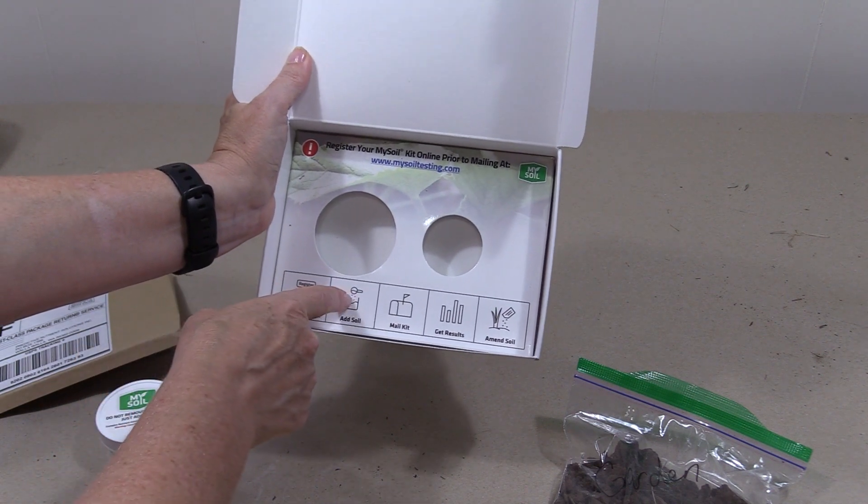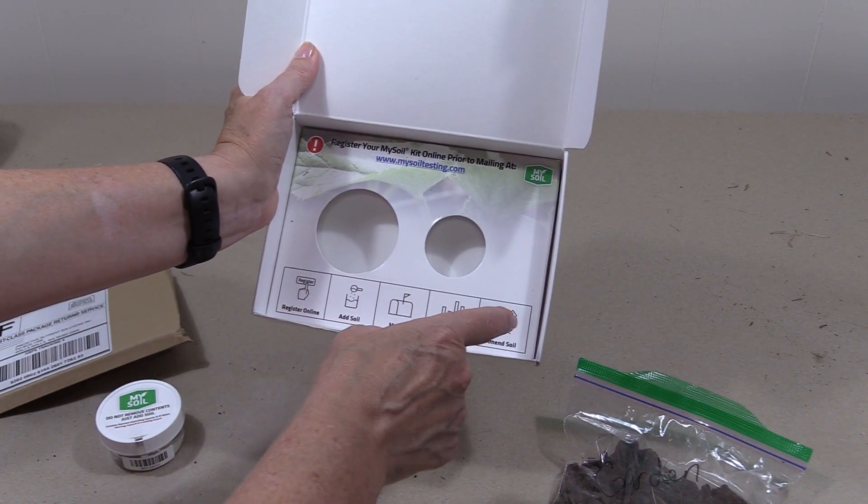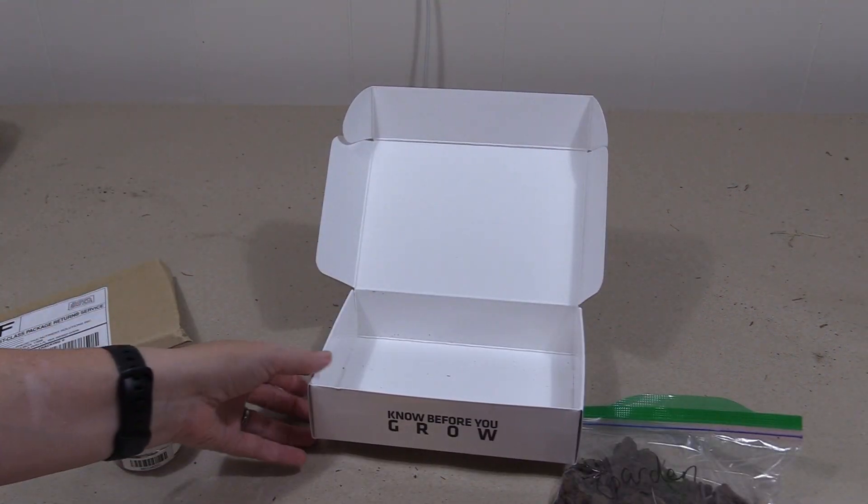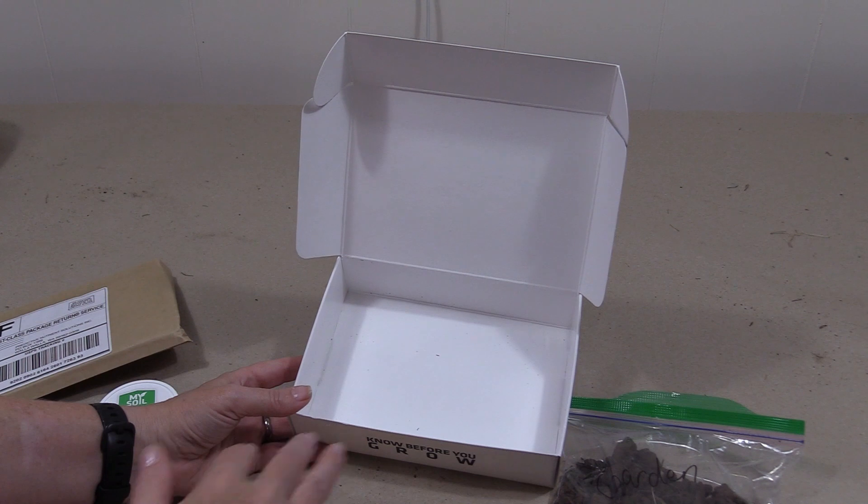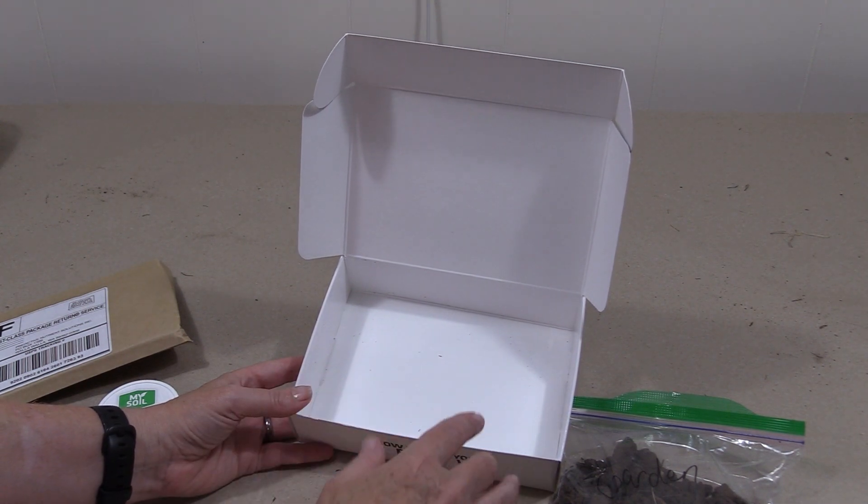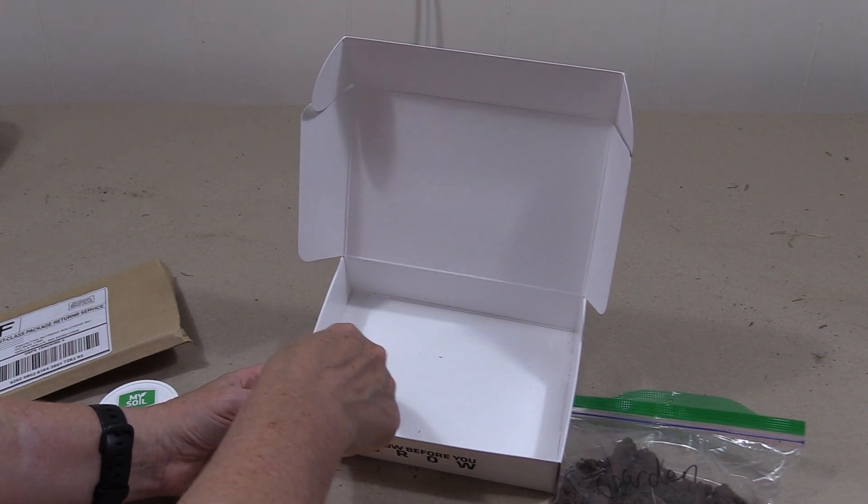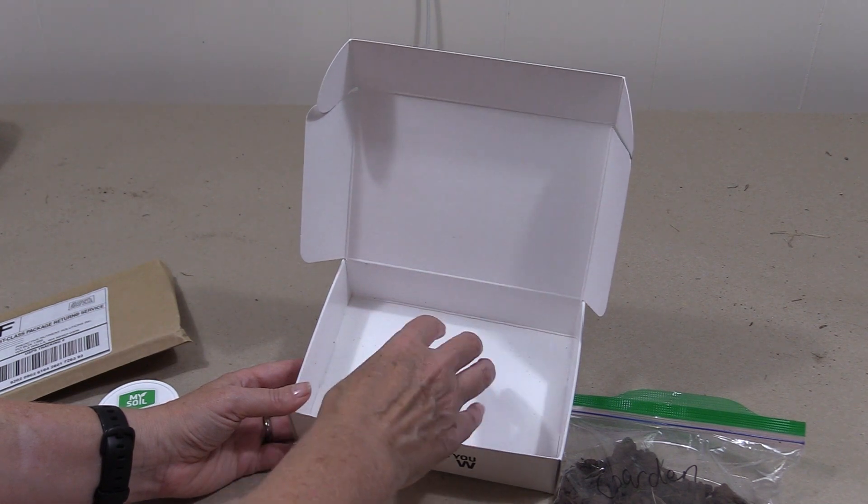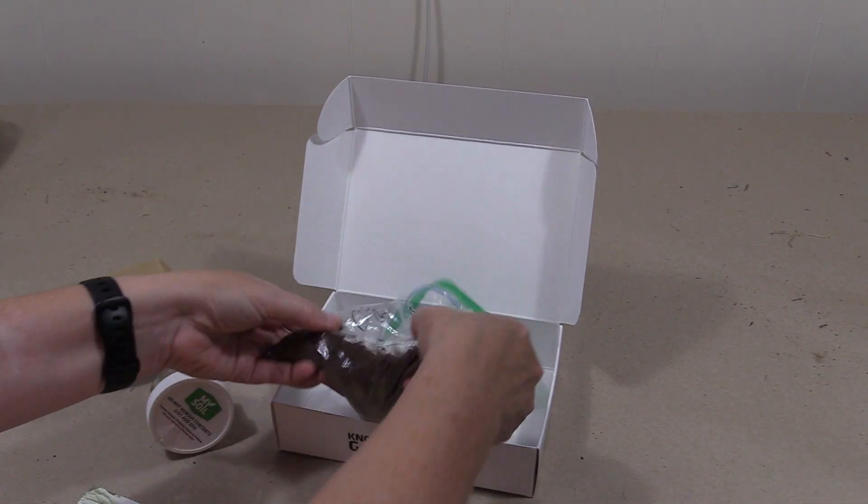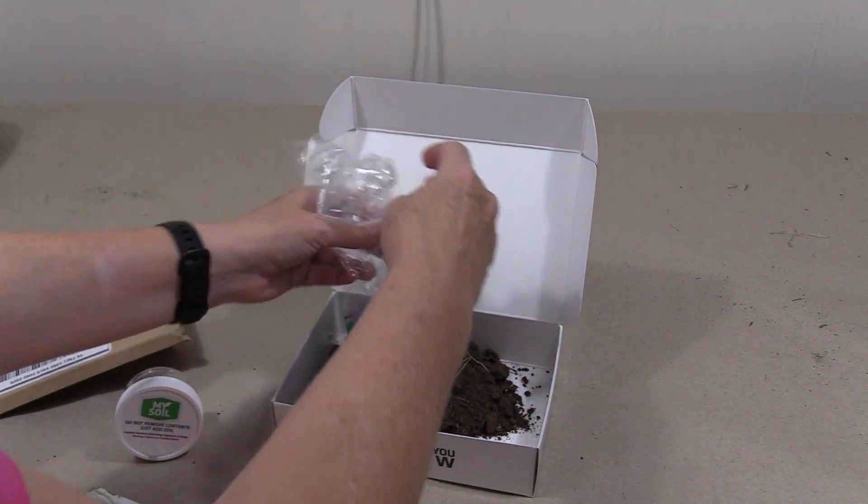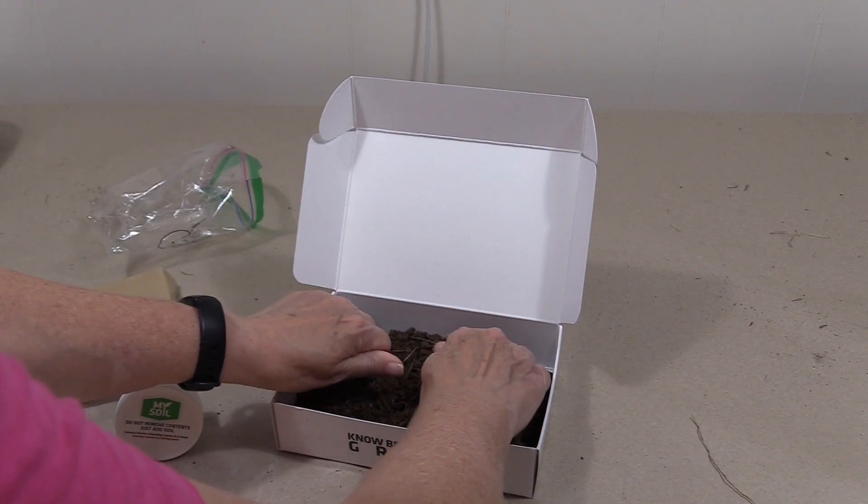So you're going to register online, add the soil, mail the kit, get results, and amend your soil. One of the things that they talk about is depending on how you want to do your soil samples, you can take samples from various areas. You want to go down about six inches, place them in the box, mix it together, and then scoop it out.